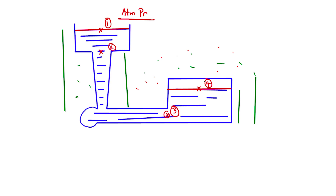There are different heights to consider, and at different points we are going to have different pressures, so we cannot solve this problem like the previous one. The height of the mold is H_M. This important height H is how much the mold cavity or pattern cavity has been filled. This height I will call H2 because it goes to point two, and H_T is the total height.